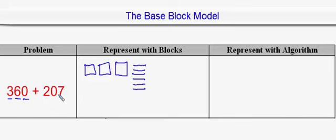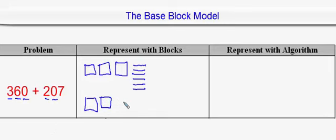We are to add that to 207, which would have 2 flats representing the 2 in the hundreds place. We'd have 0 rods, so I won't draw any of those, but we'd have 7 units. I'm going to use little dots to represent units, so there are 7 dots.